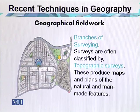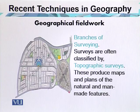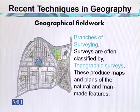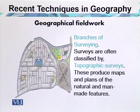The accuracy of surveying depends upon the purpose for which the survey is being undertaken, and the survey is actually controlled by the accuracy of the figures. Surveys are often classified by topographical surveys, which produce maps and plans of the natural and man-made features.